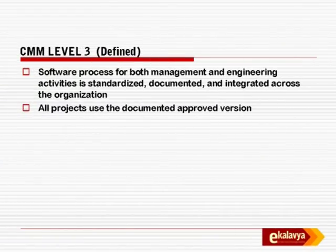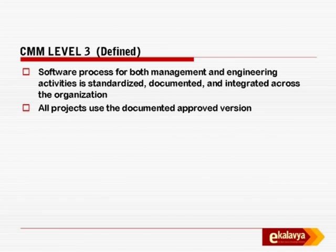Level 3 is a defined process — for management and engineering activities, the process is standardized, documented, and integrated across the organization. For coding, say Java coding standards are documented and made available to every programmer, and no programmer is permitted to write code which does not measure up to those programming standards.